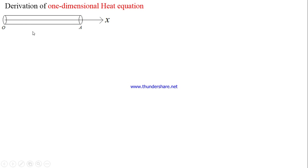With the assumption that the rod is insulated, we are expecting the flow of heat only in the positive x direction. We are deriving this one-dimensional heat equation to measure the temperature at a point x of the beam at a time t, which is denoted by θ(x, t) — the temperature at a point x of the beam at a time t.